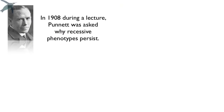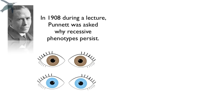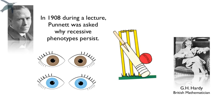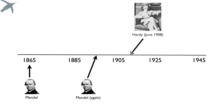In 1908, during a lecture, Punnett was asked why recessive phenotypes persist over time. For example, if brown eyes are dominant over blue eyes, why don't you end up with a whole population of brown-eyed individuals over time? Punnett was stumped, but luckily he played cricket with someone who knew the answer — G.H. Hardy, a pure mathematician. Because Punnett was a good friend, Hardy decided to help and wrote a paper in June of 1908, eloquently explaining the mathematics behind the inheritance of alleles and genotypes in a population. It was called Hardy's Law.